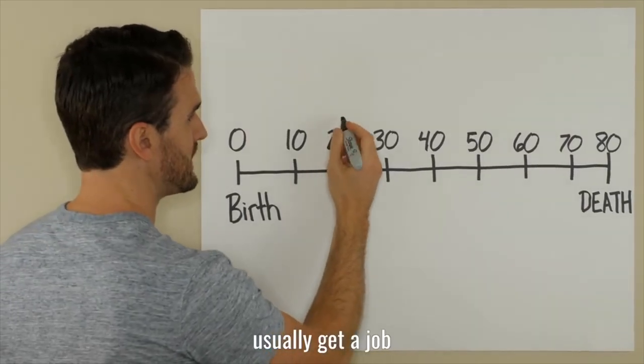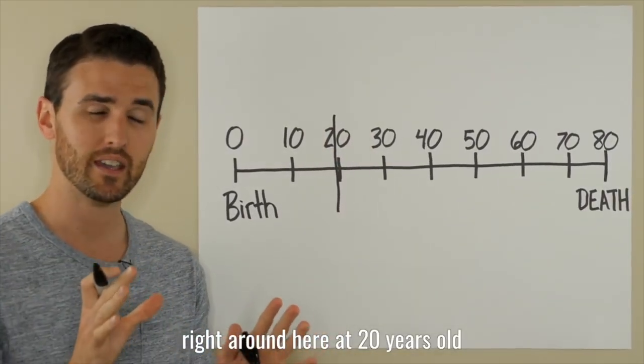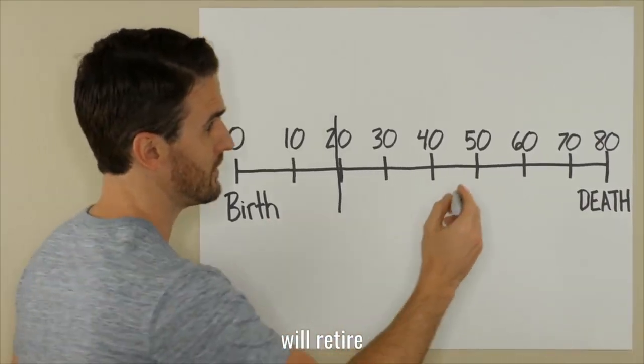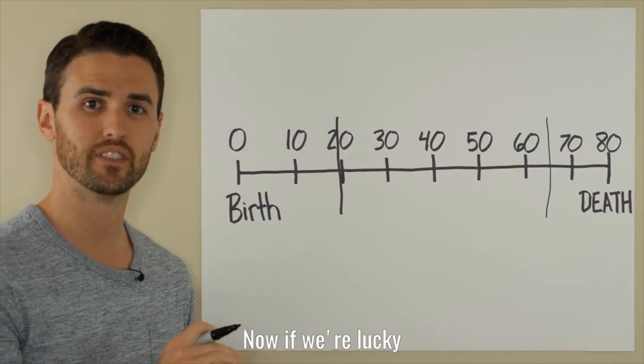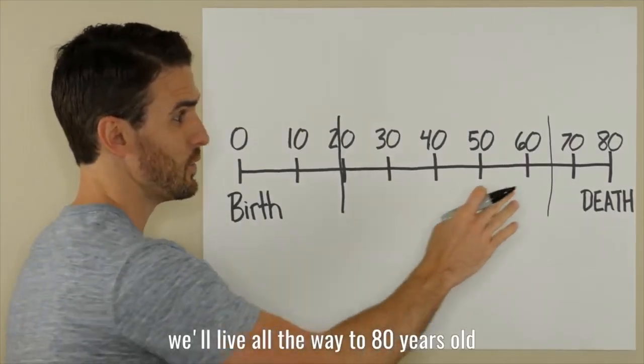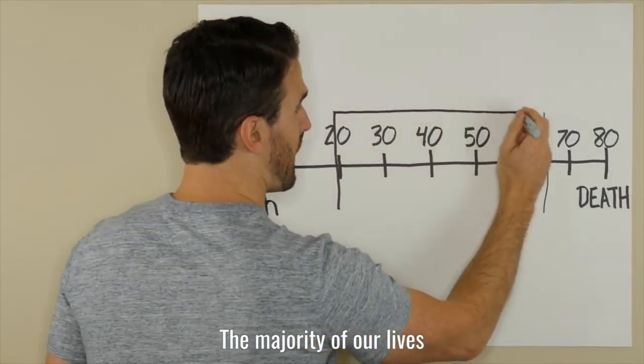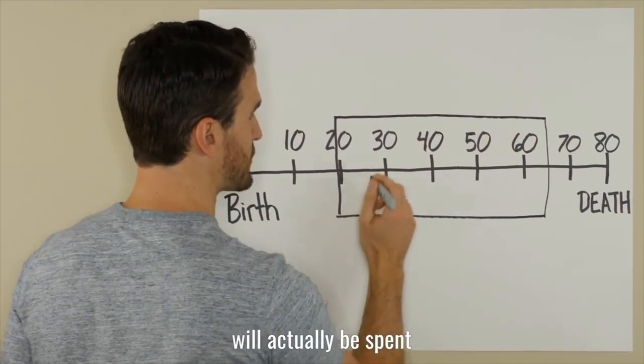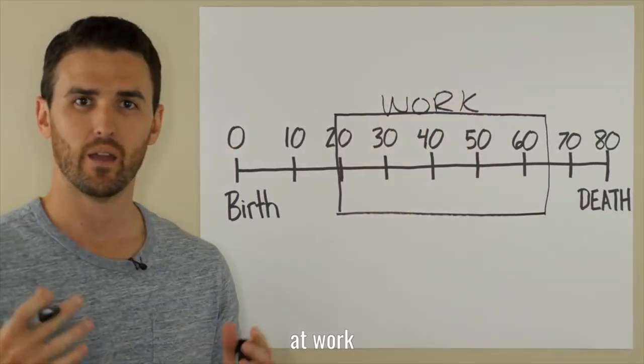And most of us usually get a job right around here at 20 years old. And most people will retire at the age of 65. Now, if we're lucky, we'll live all the way to 80 years old. Now, if you look at this, the majority of our lives will actually be spent at work.